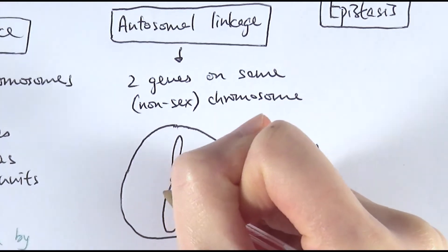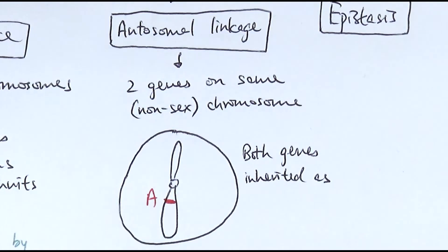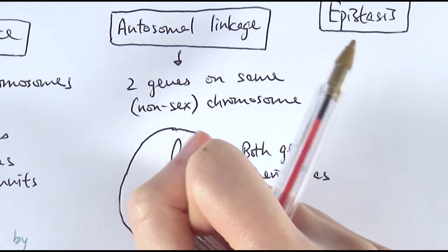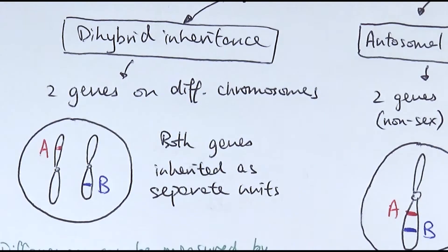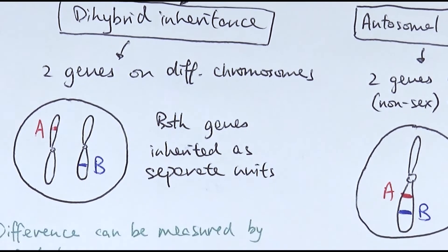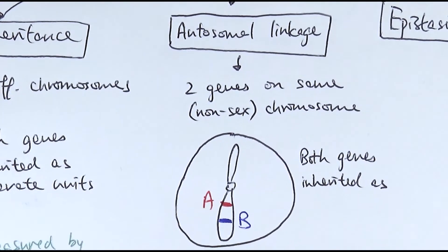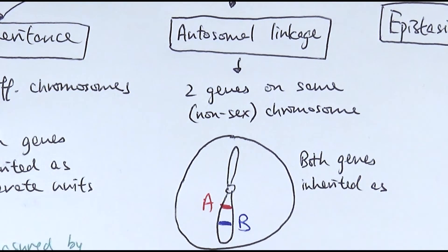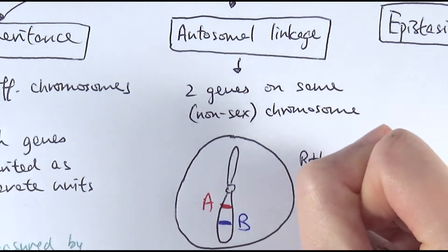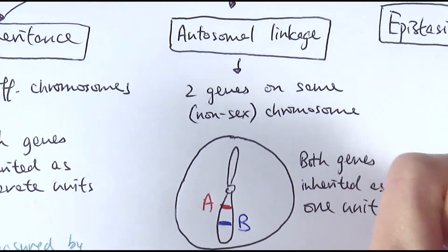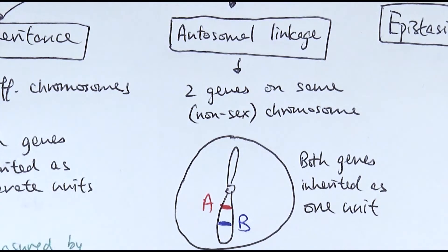For example, in this case we would find gene A and gene B on the same chromosome. So in comparison to dihybrid inheritance, when gene A and B are found on separate chromosomes, in autosomal linkage both genes are found on the same chromosome. We say that the closer those two genes are, the less likely crossing over would occur, meaning there's a much higher chance of both genes being inherited as one unit. So they would actually behave more like a monogenic inheritance rather than dihybrid inheritance.